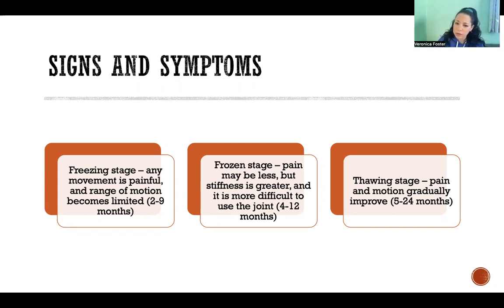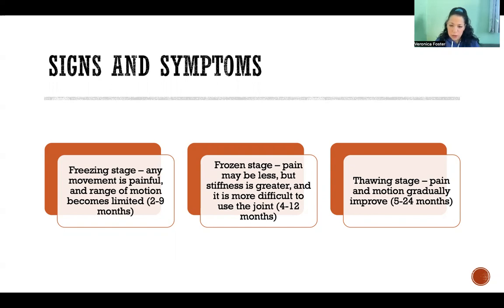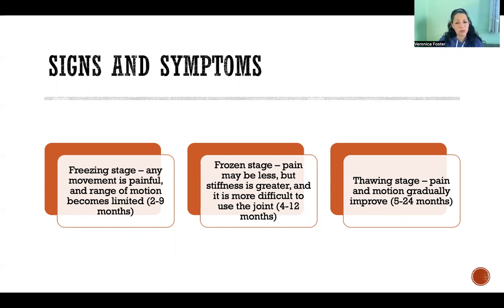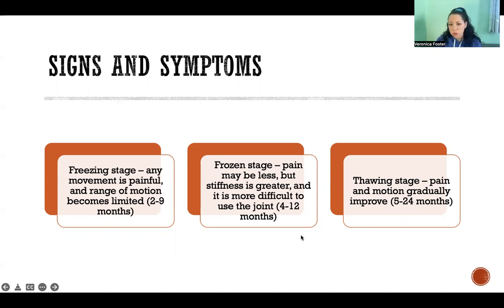The final stage is the thawing stage, where things take a turn for the better and start to loosen up and improve very gradually. Both pain and range of motion gradually improve during that stage, and it can take five months up to two years. Each stage takes quite a while and will depend significantly on the individual, why this occurred in the first place, and what types of treatments are being applied.